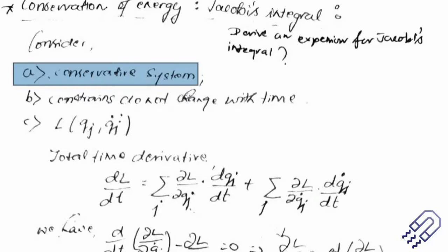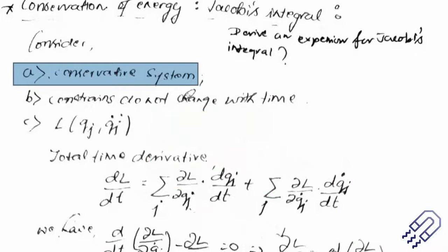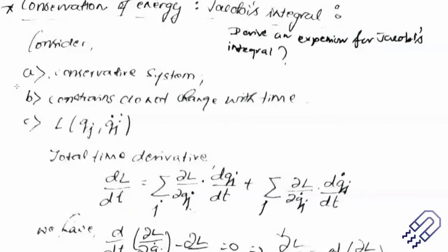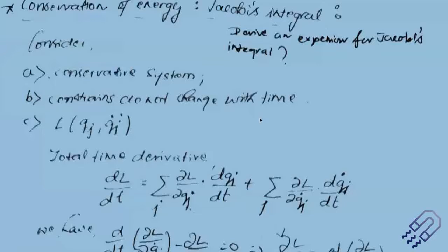When writing in your exam, note that q_j and q_j dot should be defined clearly since every answer is a new answer. Since constraints do not change with time, the Lagrangian is not explicitly time dependent, but the variables do have time dependence, so we take the total time derivative. Thus del L del t equals del L del q_j dot times d q_j dt, plus del L del q_j dot times d q_j dot dt.